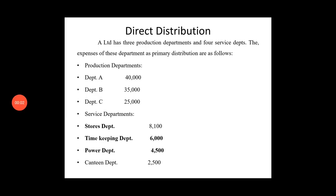Dear students, direct distribution summary. A Limited has three production departments and four service departments. The expenses of these departments are distributed as follows: Department A 40,000, B 35,000, C 25,000. Service departments: Store department 8,100, then Timekeeping department, Power department, and Candy department.